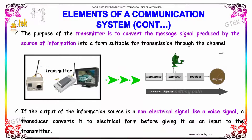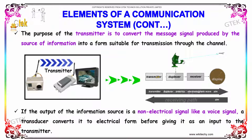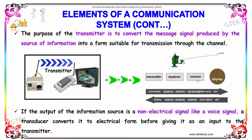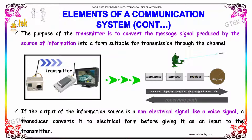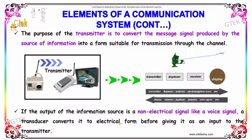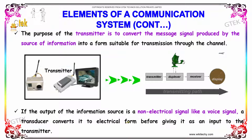The purpose of the transmitter is to convert the message signal produced by the source of information into a form suitable for transmission through the channel. If the output of the information source is a non-electrical signal like a voice signal, a transducer will convert it into an electrical form before giving it as an input to the transmitter.